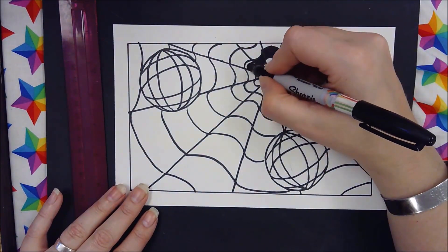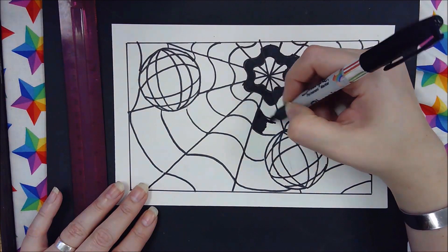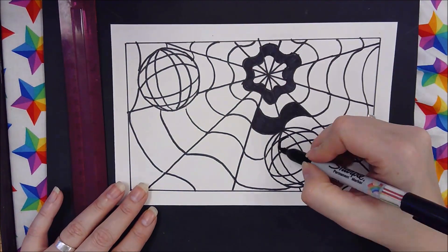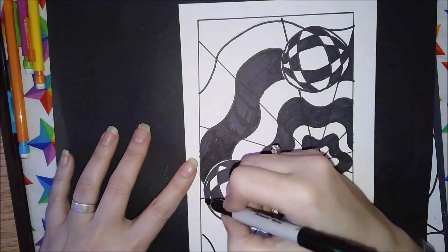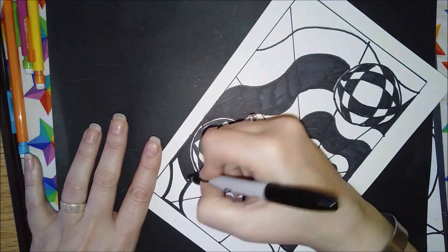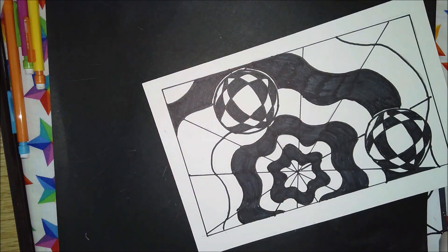Now I am choosing to color every other space black. I'm just filling in with a sharpie. You can also choose to leave these spaces white. It is completely your choice. Finish filling them in at every single place where they need to be.